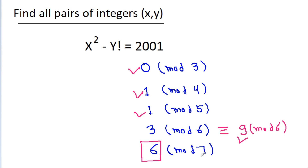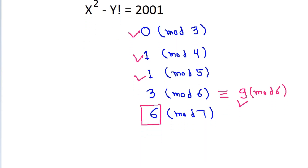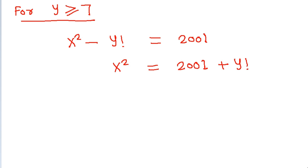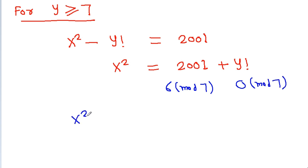But 6 is not a quadratic residue of mod 7. For y greater than or equal to 7, 2001 is 6 mod 7, and y factorial will be 0 mod 7. So we get x squared is equal to 6 mod 7. Since 6 is not a quadratic residue of mod 7, this is not possible.